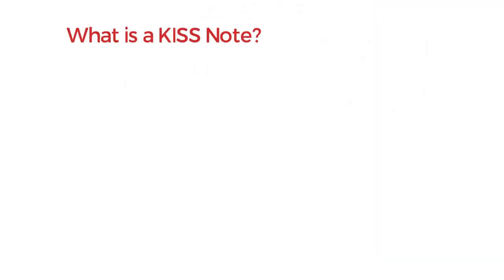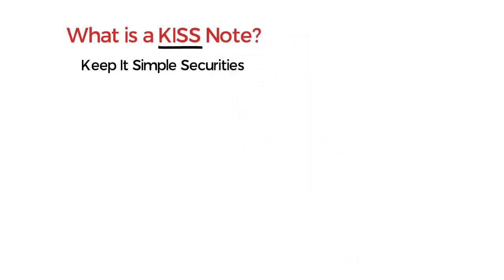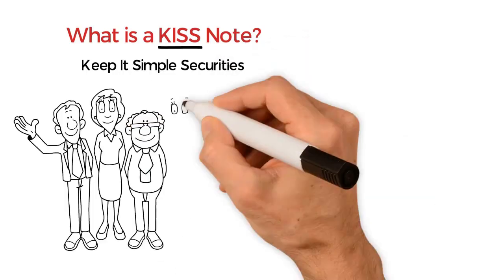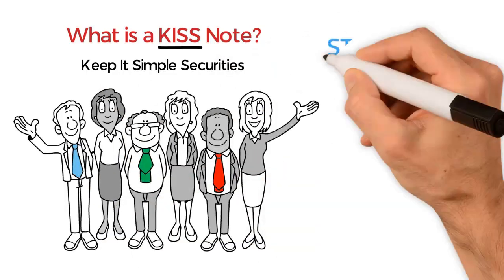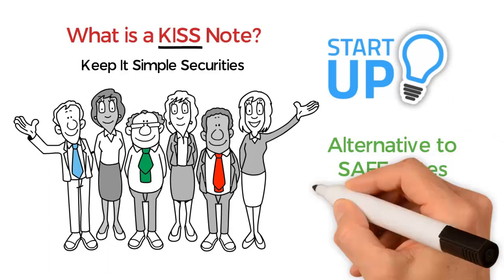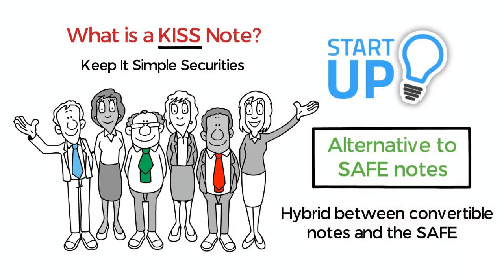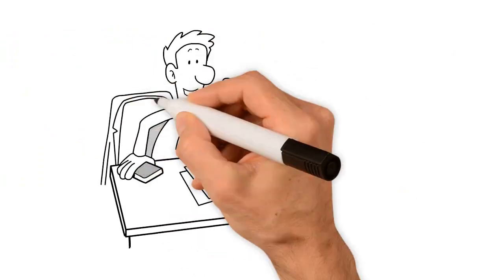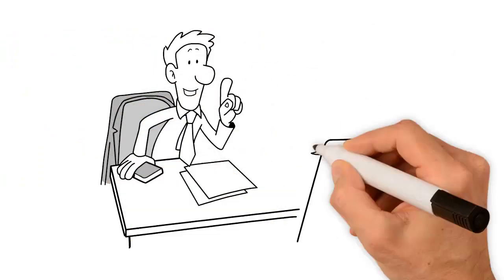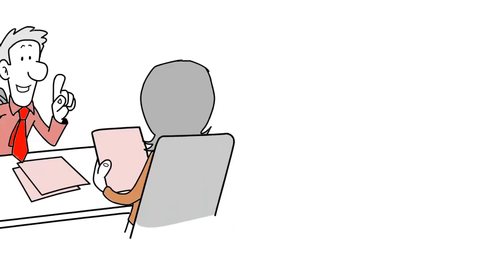KISS Notes. What is a KISS Note? KISS refers to Keep It Simple Securities. Popularized by 500 startups, it is an alternative to safe notes that is a hybrid between convertible notes and the safe. Generally, it is seen to be simpler and easier to negotiate than the conventional convertible note.